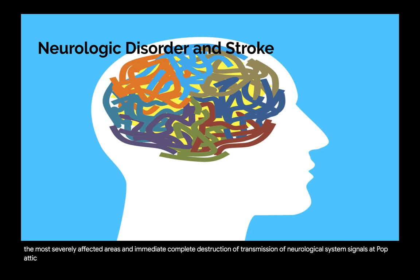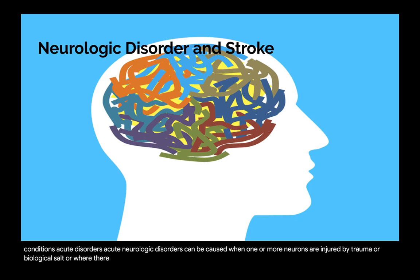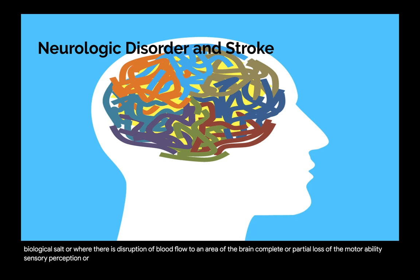Apoptotic cell death, a slower biochemical or metabolic destruction of the nerve cell, occurs in chronic and degenerative neurological conditions. Acute neurologic disorders can be caused when one or more neurons are injured by trauma or biological assault, or when there is disruption of blood flow to an area of the brain. Complete or partial loss of motor ability, sensory perception, or cognitive function can result. Acute neurologic disorders discussed in this chapter include spinal cord injury (SCI), stroke, and Bell's palsy.